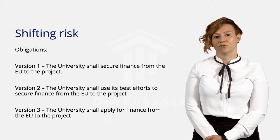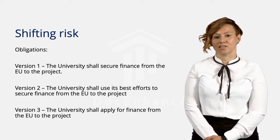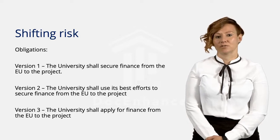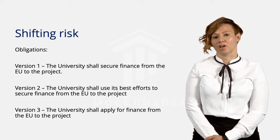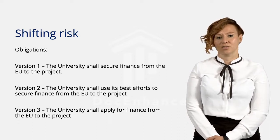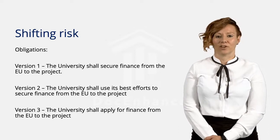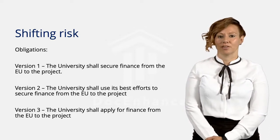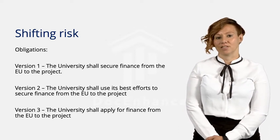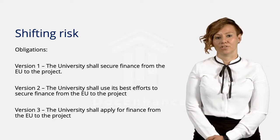Version 3 eliminates the obligation for the university to secure finance. Instead the university now simply has to apply for finance. As you can see in this example, changing a phrase will also change the standard of liability. If the standard is not met, the other party may sue the university.